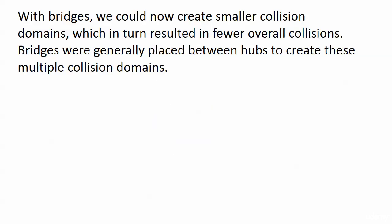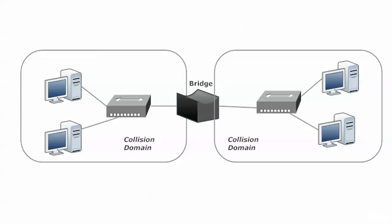We're now talking about bridges, and why were bridges such a huge step forward? Well, we can now create smaller collision domains, which in turn resulted in fewer overall collisions. Bridges were generally placed between hubs to create these multiple collision domains. Bridges didn't replace hubs as much as they were just a nice addition to our network, because we could do something like this — where we have two smaller collision domains, and data sent by hosts on the left cannot collide with data sent by hosts on the right. When we had one big collision domain, anybody's data could collide with anybody.